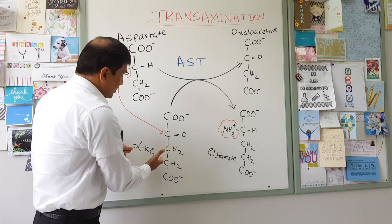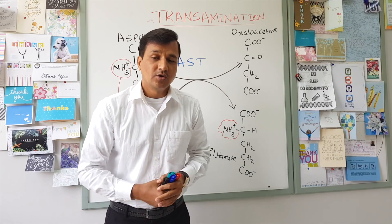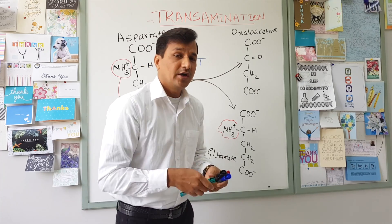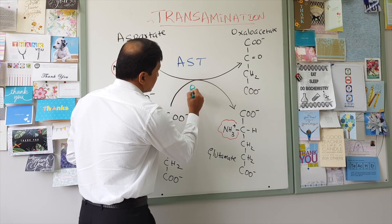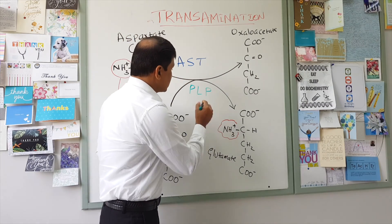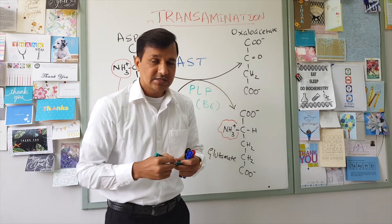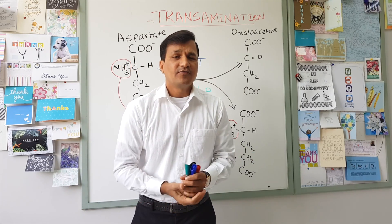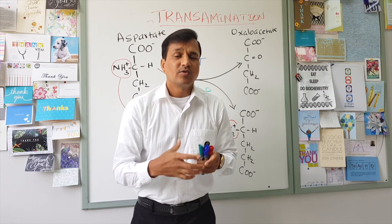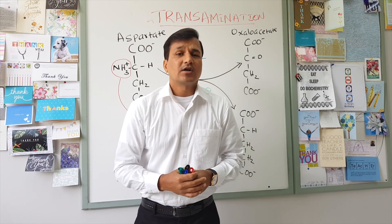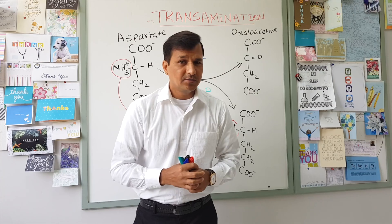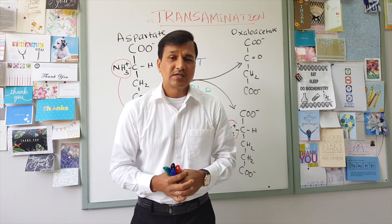In order to perform this function, aspartate transaminase needs a coenzyme, and that coenzyme is PLP — pyridoxal phosphate — which is the active form of vitamin B6, that is pyridoxine. Pyridoxal phosphate acts as a coenzyme for hundreds of enzymes in our body, and transamination reaction is one of the requirements for pyridoxal phosphate. Deficiency of vitamin B6 can decrease transamination reactions.